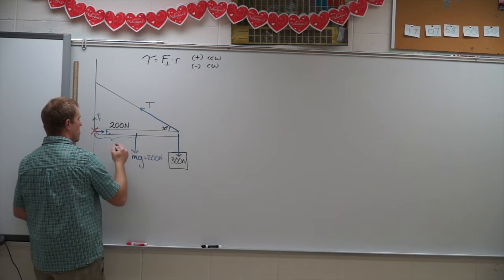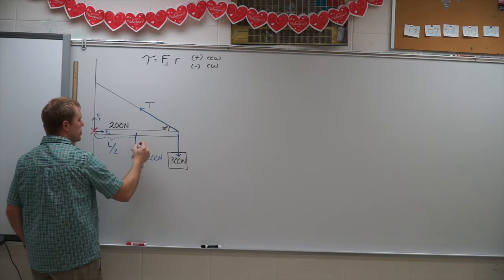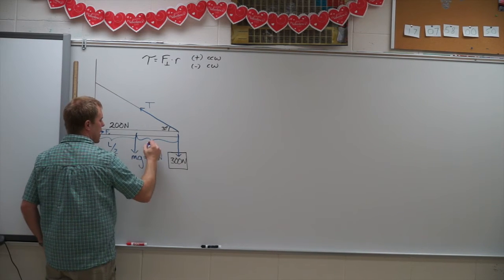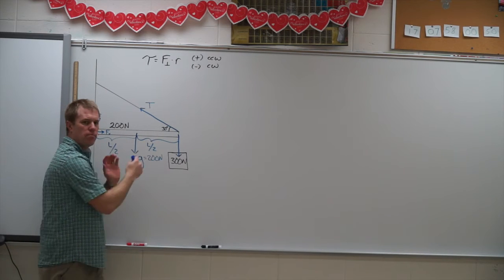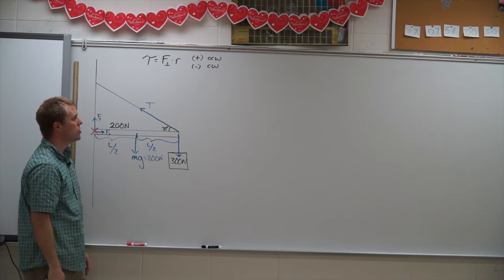So I'm going to need to include the distance from the axis of rotation to each of my forces. So if I call the length of the rod L, this is going to be L over 2. And this side over here is L over 2. I tend to write in each little component so that they all add up to the total length.